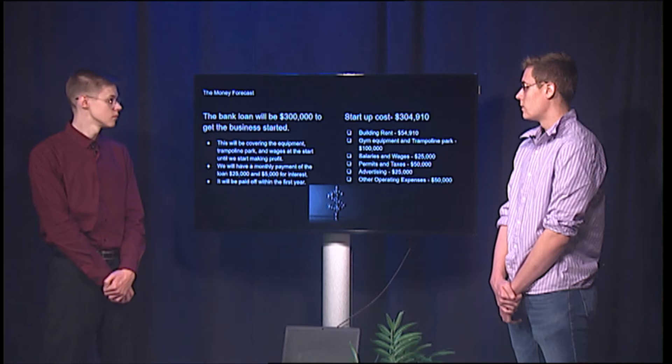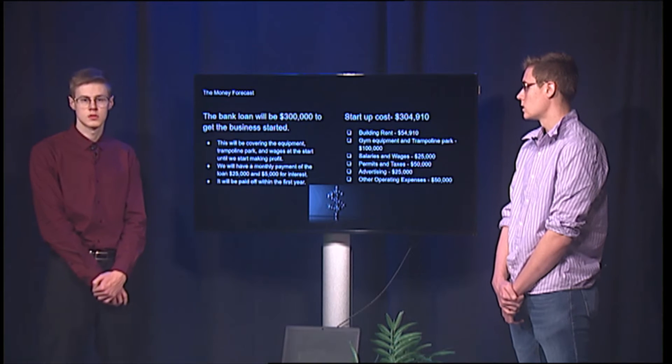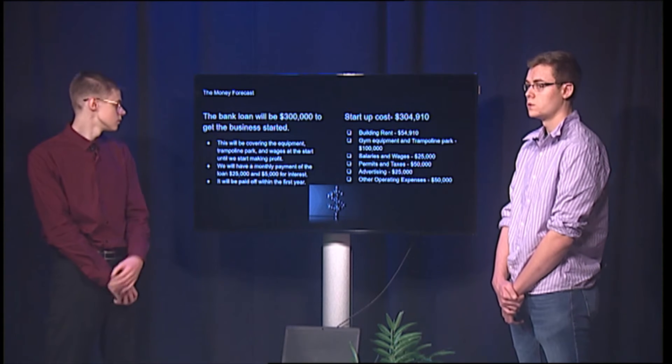The money forecast. The bank loan will be $300,000 to get the business started. This will be covering the equipment, trampoline park, and wages at the start until we start making profit. We will have the monthly payment of the loan, $25,000 and $5,000 for interest. It will be paid off within the first year.